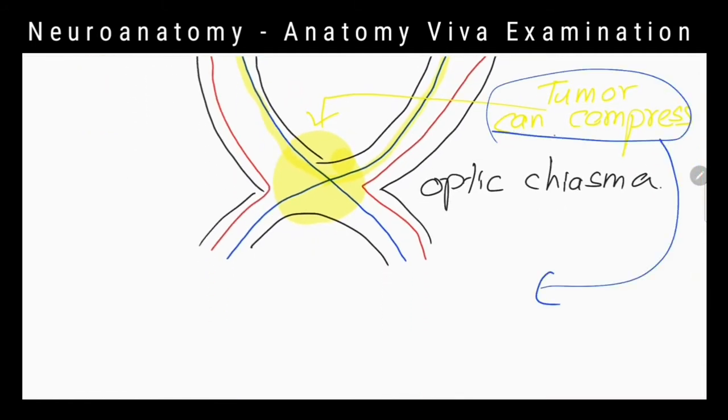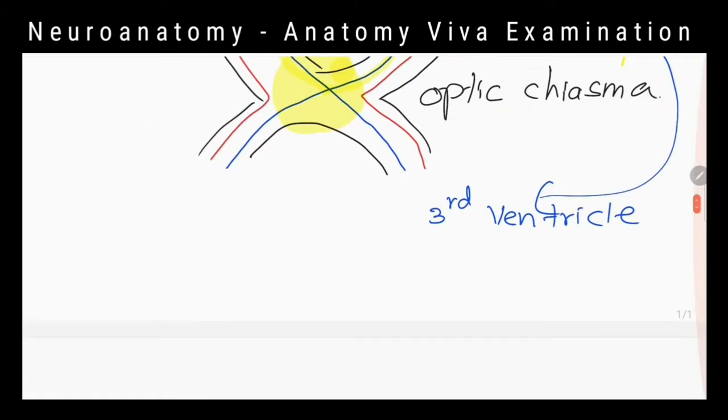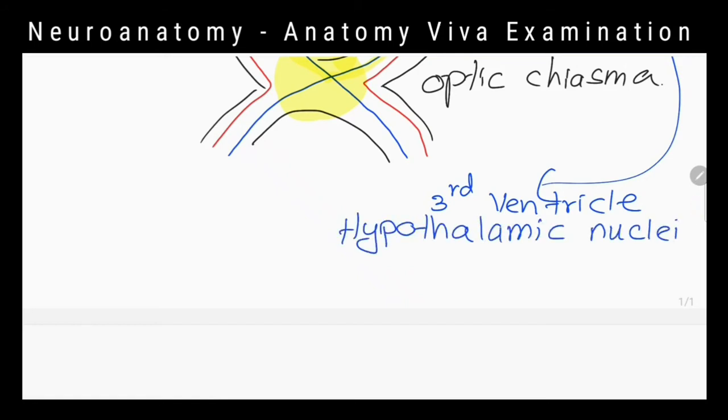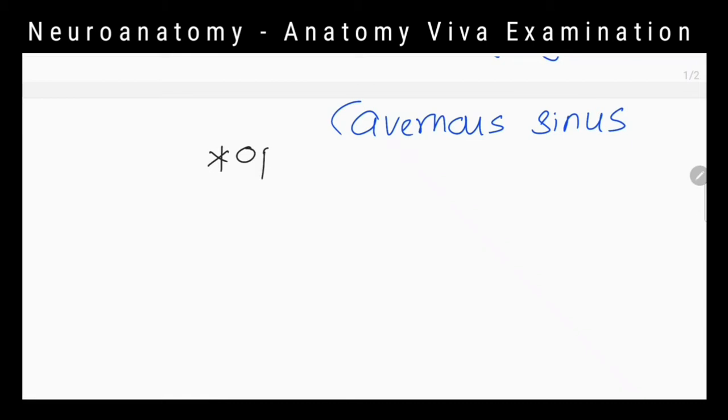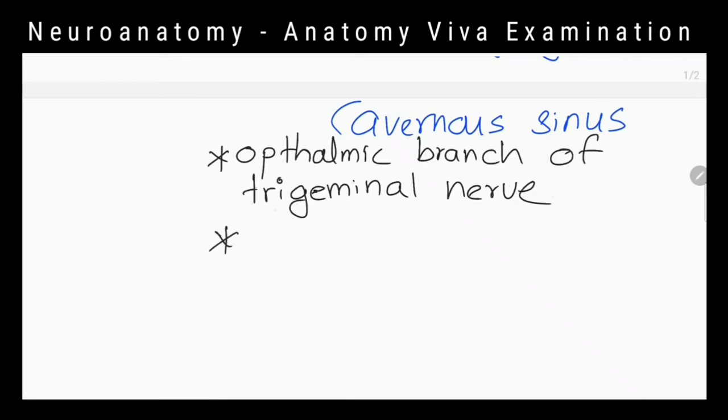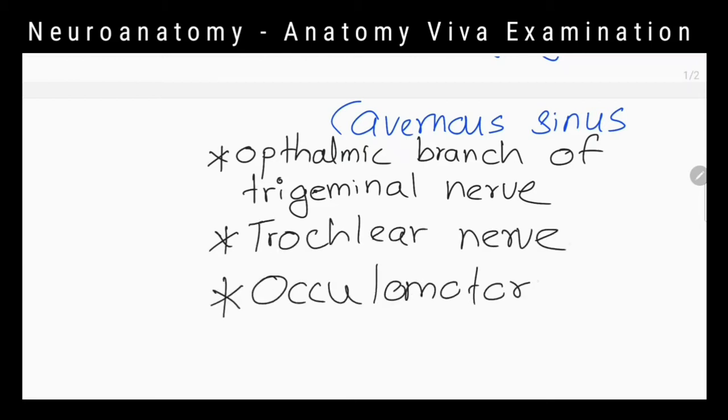What are the other nearby structures that can get affected? Third ventricle, hypothalamic nuclei above the pituitary gland, pituitary gland, cavernous sinus. What are the nerves related to lateral wall of the cavernous sinus? Ophthalmic branch of the trigeminal nerve, trochlear nerve and oculomotor nerve.